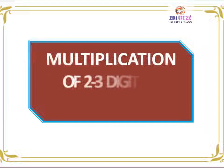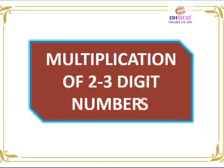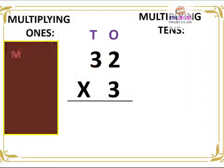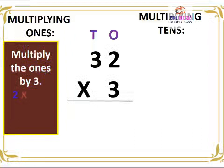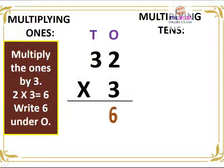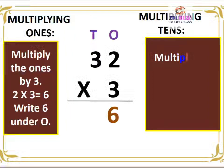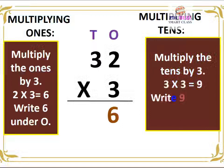Multiplication of 2 to 3 digit numbers. 32 × 3. Multiplying ones: multiply the ones by 3. 3 × 2 is equal to 6, write 6 under O. Multiplying tens: multiply the tens by 3. 3 × 3 is equal to 9, write 9 under T. 32 × 3 is equal to 96.